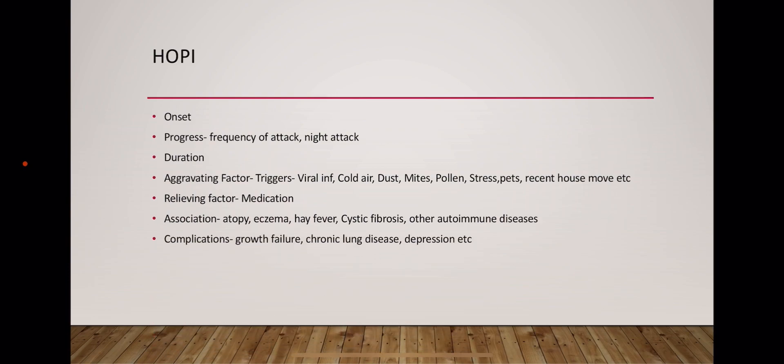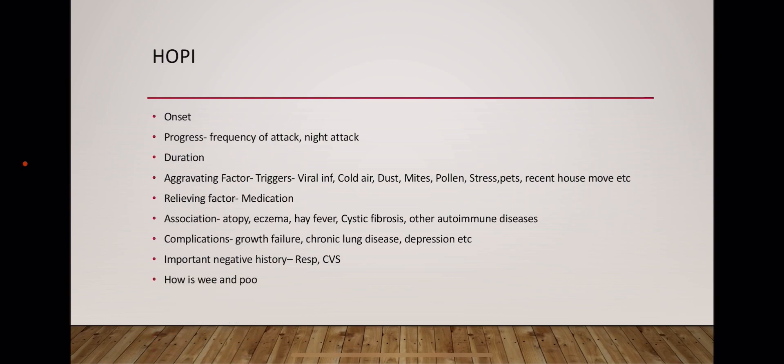Ask about any associated complications such as growth failure, chronic lung disease, or depression. Important negative history to take should relate to respiratory symptoms as well as cardiovascular symptoms, and how is the wee and poo.